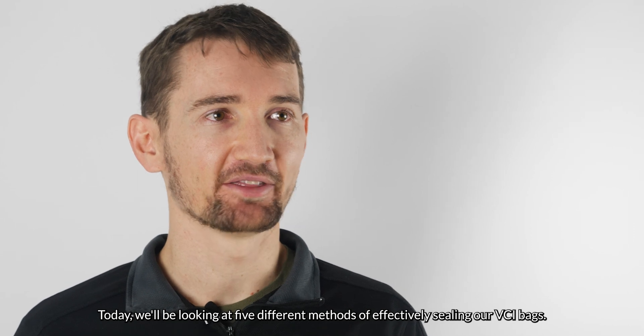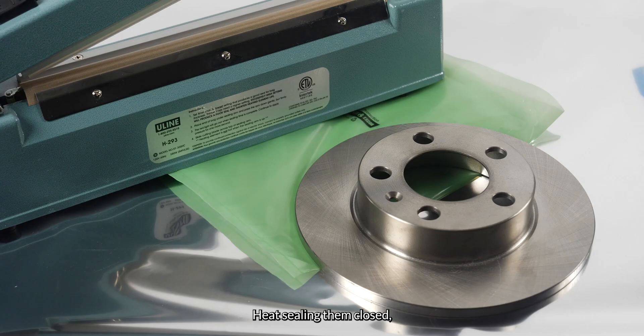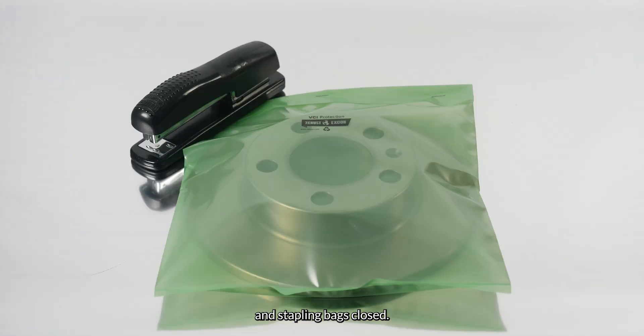Today we'll be looking at five different methods of effectively sealing our VCI bags: heat sealing them closed, using our zipper bags, taping bags closed, zip tying bags, and stapling bags closed.